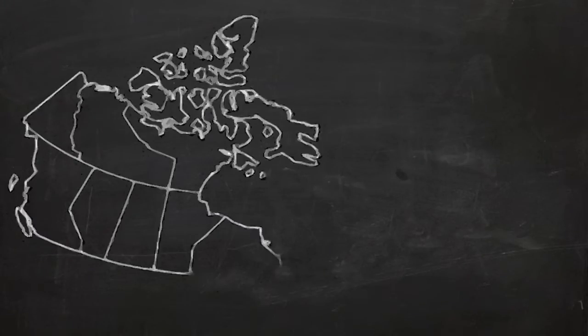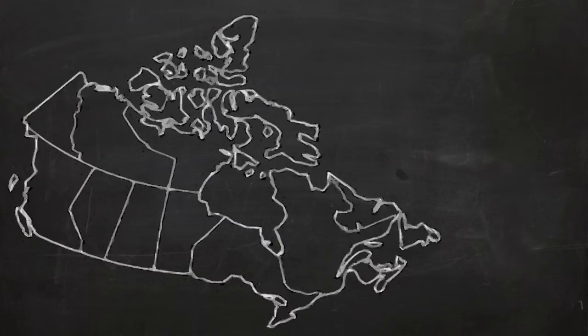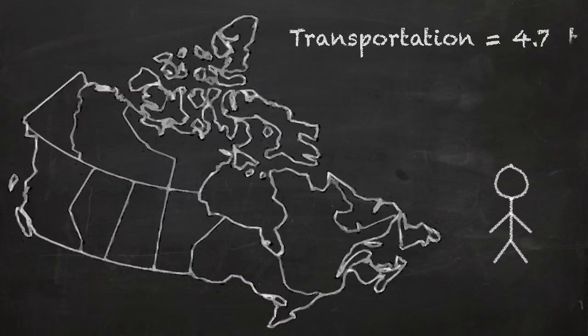According to Environment Canada's 2012 National Greenhouse Gas Emissions figures, for every person in Canada, transportation was responsible for the equivalent of 4.7 tons of carbon dioxide, and electricity usage was responsible for 2.5 tons.